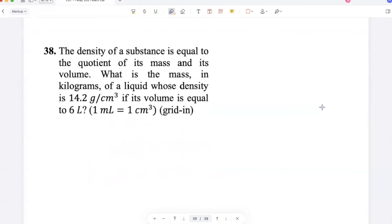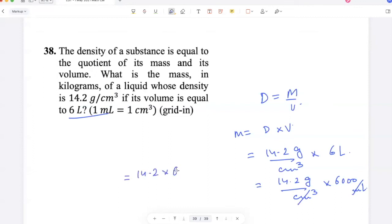The density of a substance is equal to the quotient of its mass and its volume. What is the mass in kilograms of a liquid whose density is 14.2 grams per cm³ if its volume is 6 liters? Density is mass over volume, so mass is density multiplied by volume. Density is 14.2 grams per cm³ and volume is 6 liters, which is 6000 milliliters. Milliliter and cm³ cancel. This becomes 14.2 into 6000 grams, and I need to give my answer in kilograms, so 14.2 into 6 kilograms, which is 85.2 kilograms.